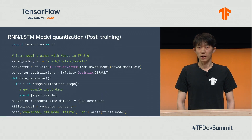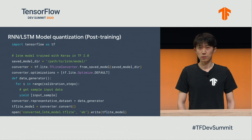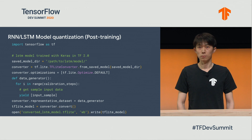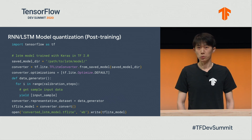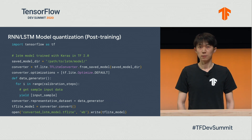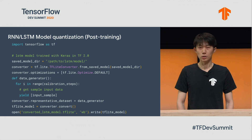This slide shows an end-to-end workflow in the post-training setup. We create the TensorFlow Lite converter and load a saved RNN model. We then set the post-training optimization flags and provide calibration data. After that, we call the convert method to convert and quantize the model. This is the exact same API and workflow for models without RNNs, so there is no API change for end users.